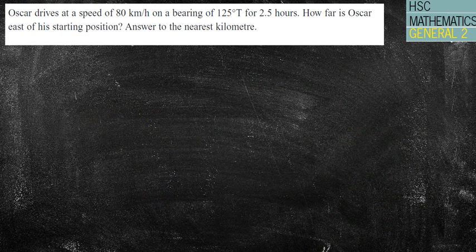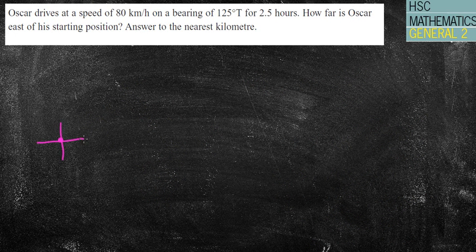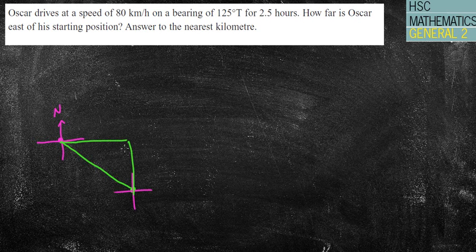Next question. Oscar drives at a speed of 80 kilometers per hour on a bearing of 125 degrees true north for 2.5 hours. How far is Oscar east of his starting position? A bit more challenging in this question. This was one of the challenge questions in the exercises. So I'm going to start off with my north, south, or northeast, southwest bearing. Oscar drives at a speed of 80 kilometers per hour on a bearing of 125. Well, 125 will put me down here somewhere like that. Going to draw a nice big one, big line. Big diagrams are most important. And it's asking how far east, so I'm going to draw a line across there. That's my due east line. And I'm going to draw my little triangle here. You're always looking for a right-angled triangle there.